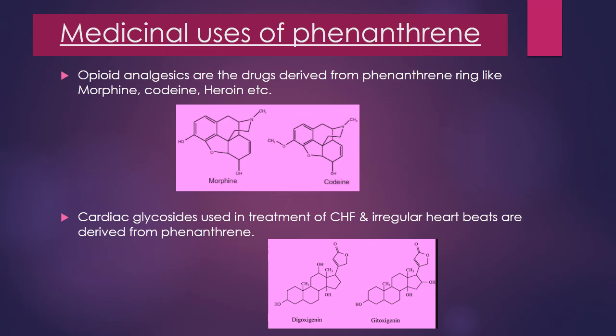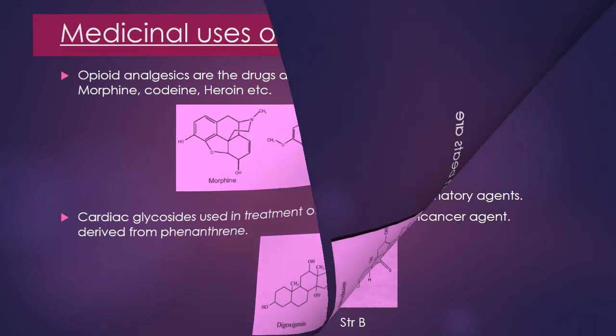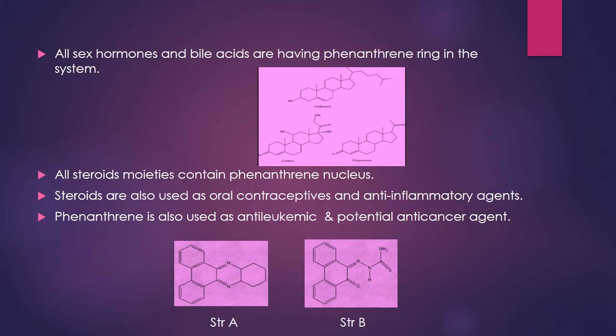Regarding the medicinal uses of phenanthrene — opioid analgesics derived from the phenanthrene ring include morphine and codeine, whose structures are shown in the figure. Cardiac glycosides used in the treatment of congestive heart failure (CHF) and irregular heartbeats are also derived from phenanthrene. The structures of digitoxigenin are shown in the figure. All sex hormones and bile acids contain a phenanthrene ring in the system.